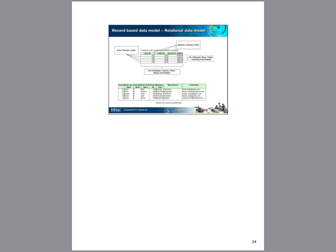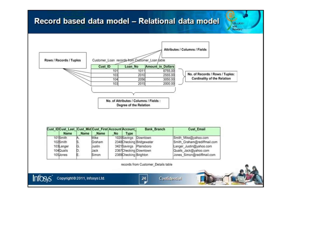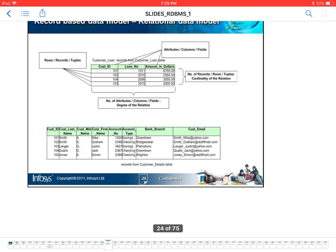Here I am going to give an example of a relational database model where you can see multiple tables. There are two tables. One is the customer table where the attributes are customer ID, loan number, and amount in dollars. The multiple rows are known as tuples. Among them, one column must be the primary key containing unique values. The customer ID is termed as the primary key because all its values are unique. However, if a particular customer has multiple loan numbers, the customer ID would appear multiple times and cannot be unique.